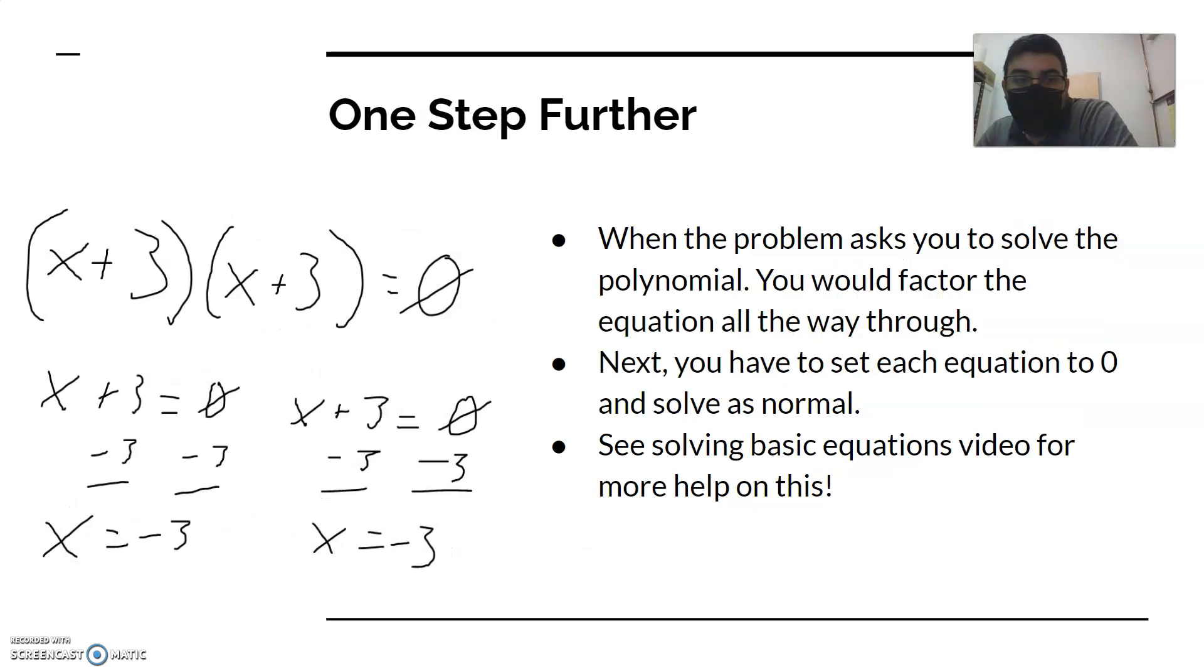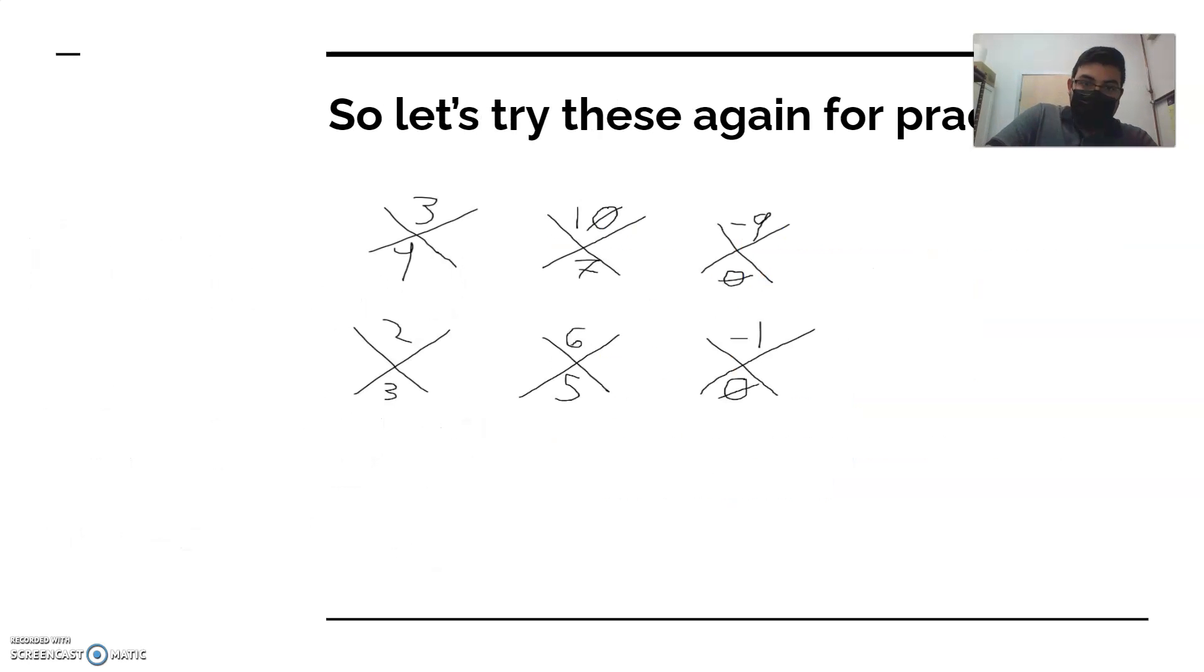To take that a step further, we got to reference back the one-step and two-step equations where we set numbers equal to zero and just solve for x. That's all you're doing in these equations. You just do it twice since you have two. So x + 3 = 0, subtract 3 on both sides to get x by itself. x = -3 for both equations. So pretty simple, not too tough.